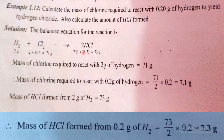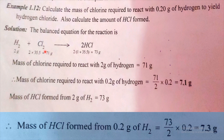This is a stoichiometric calculation. The balanced equation is: H2 plus Cl2 gives 2HCl.